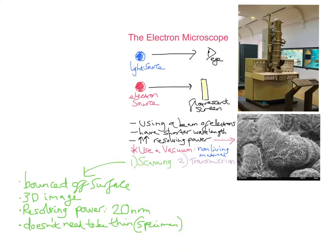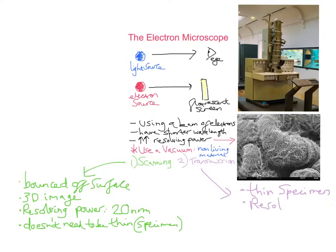For the transmission electron microscope, the beam passes through a thin section of the specimen, so we need a thin specimen. Parts of the specimen actually absorb electrons and appear dark; other parts allow electrons to pass through — transmit through them — and appear bright. The resolving power of a transmission electron microscope is 0.1 nanometres, which is significantly smaller and makes it quite a powerful piece of equipment.